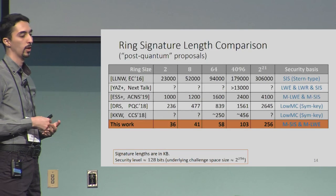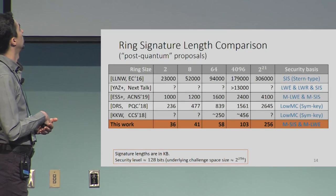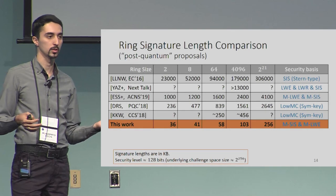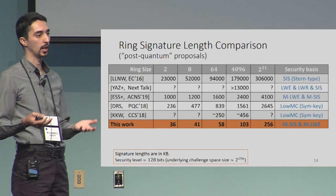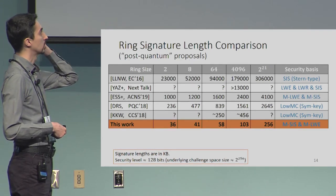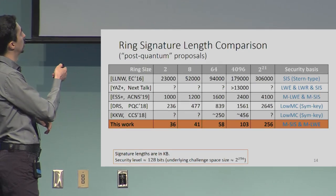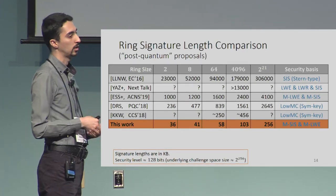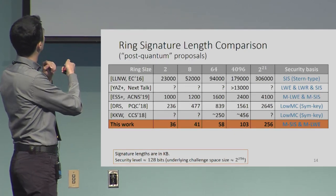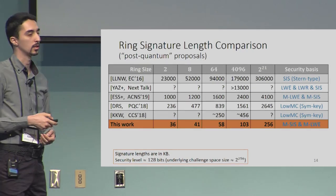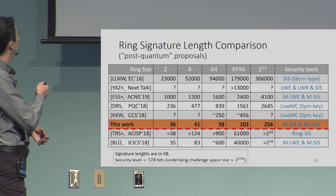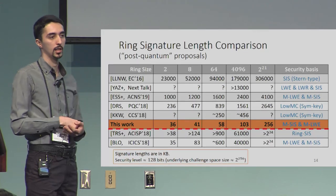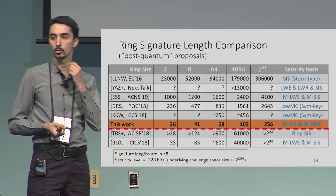To give an idea of effectiveness: this is a comparison of post-quantum ring signatures. A ring signature lets one user sign on behalf of a group, with signature length related to ring size. For sublinear-size schemes ranging from ring size 2 up to 2^21, we have a dramatic improvement over existing schemes. DRS and KKW are symmetric-key-based; the others are lattice-based. For the smallest ring size of two, we match the efficiency of linear-sized proposals tailored for small ring sizes.